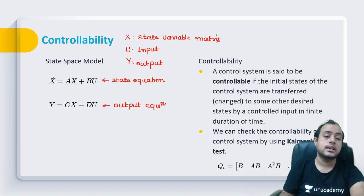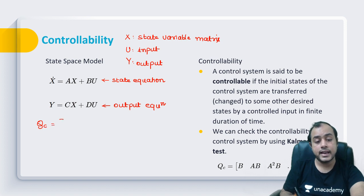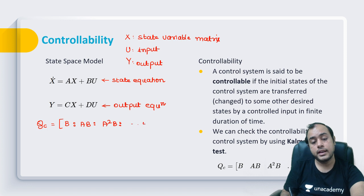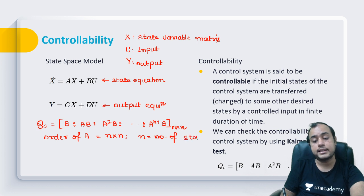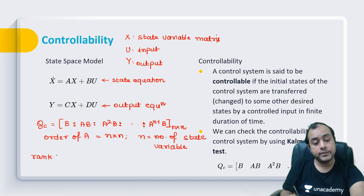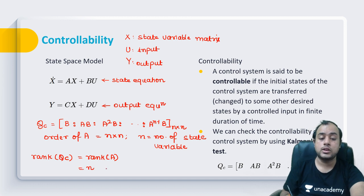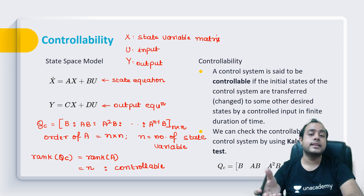To judge the controllability of the system we use Kalman's test. In Kalman's test we form a controllability matrix — an augmented matrix: [B, AB, A²B, ..., A^(n-1)B]. This matrix has order n×n, where n is also the number of state variables. If the rank of Qc equals rank of A (i.e., equals n), the system is controllable. This is called Kalman's test. The other test is called Gilbert's test.